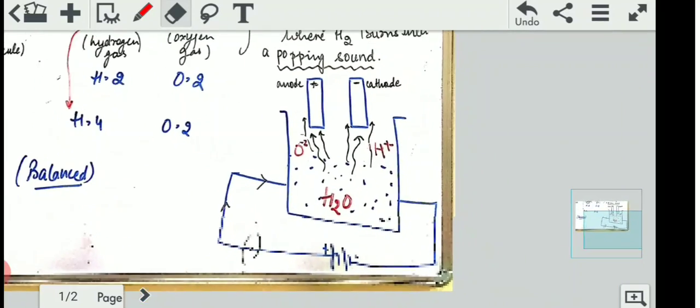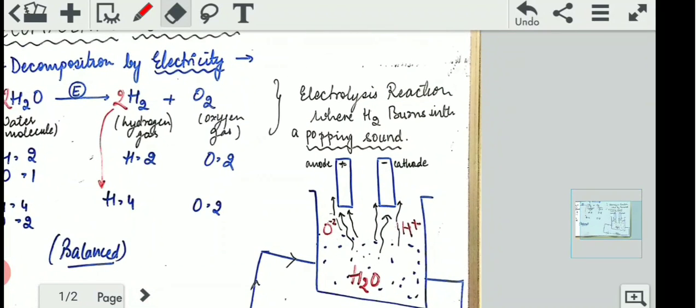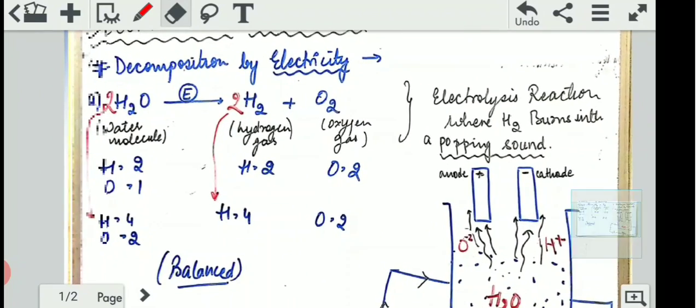So now what happens is, this is a setup which I have taken. This is a type of a setup. So there is a process called as electrolysis reaction. As the name suggests, electro means electricity. And lysis in science means breakdown.